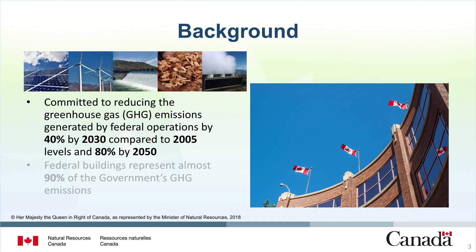This training will support federal organizations to meet their commitments and lead by example. The federal government has committed to reducing emissions from their operations by 40% below 2005 levels by 2030 and by 80% by 2050, as outlined in the Greening Government Strategy. It is important to note that federal buildings represent almost 90% of the government's greenhouse gas emissions. This initiative also supports the commitment by Canada's federal, provincial and territorial First Ministers to scale up efforts to transition to highly efficient buildings and zero emission vehicle fleets, as specified in the Pan-Canadian Framework on Clean Growth and Climate Change.